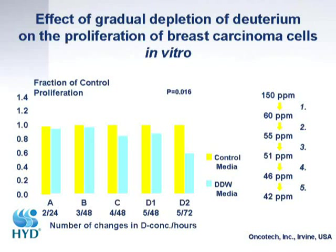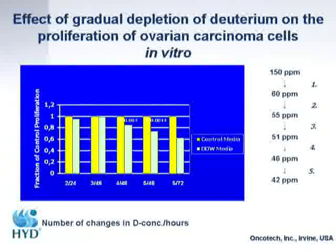In all these in vitro experiments, deuterium concentration was reduced in one step. Later, we asked scientists to reduce it in five steps — twice within 24 hours, three times, four times, or five times within 48 or 72 hours. The more times the deuterium concentration was decreased, the greater the inhibitory effect, observed consistently across two cell lines. This mirrors what happens when people or animals consume deuterium depleted water, where there is a gradual decrease in deuterium concentration.